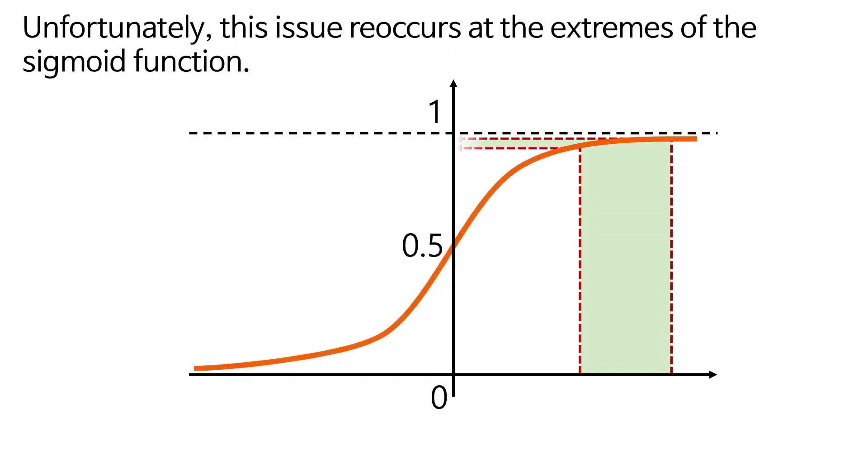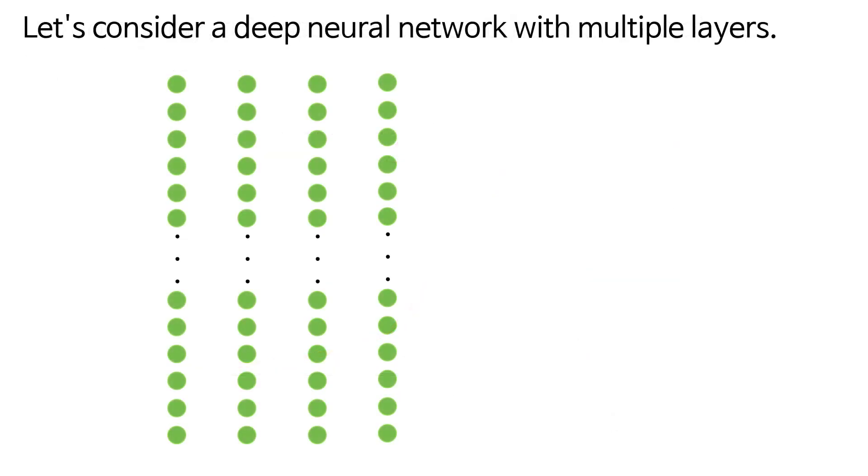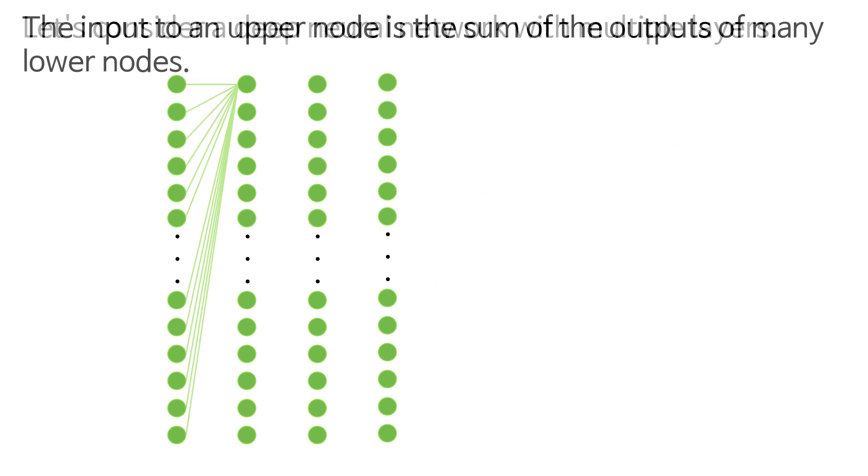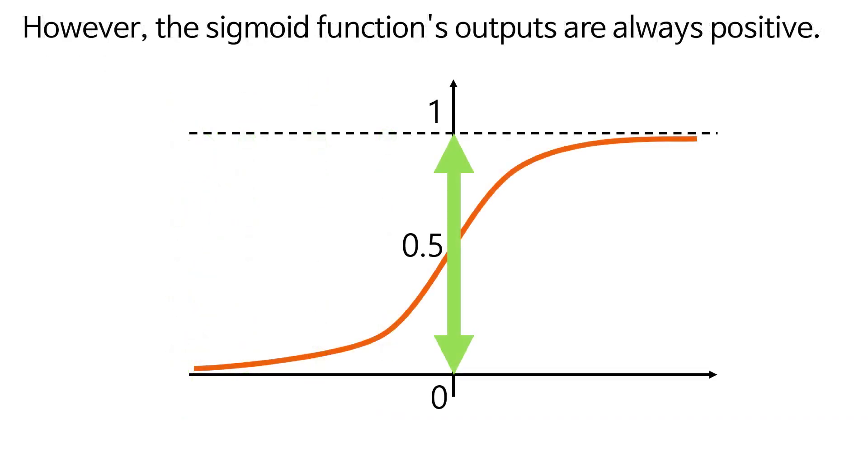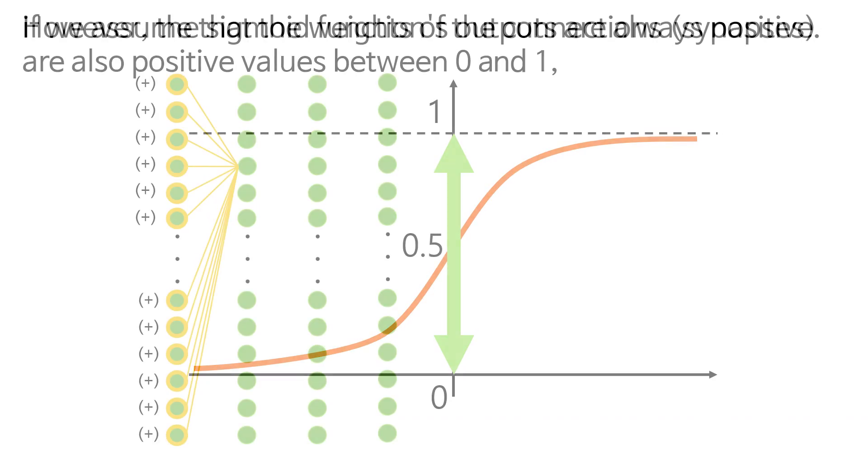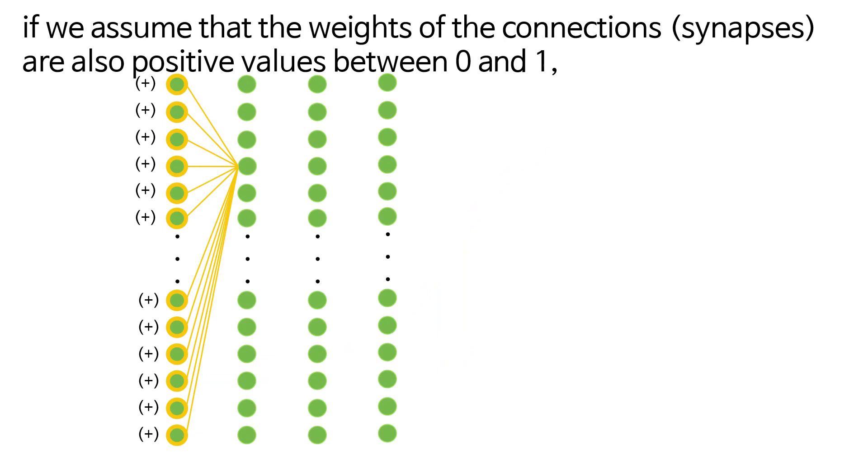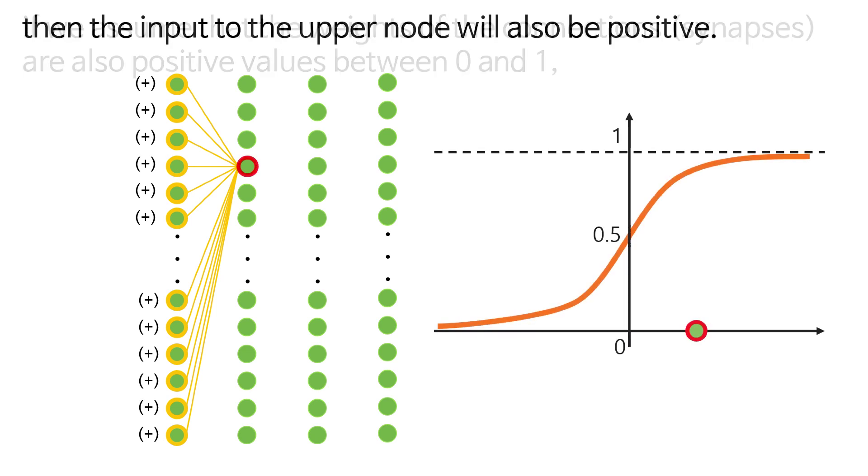Unfortunately, this issue reoccurs at the extremes of the sigmoid function. Let's consider a deep neural network with multiple layers. The input to an upper node is the sum of the outputs of many lower nodes. However, the sigmoid function's outputs are always positive. If we assume that the weights of the connections, synapses, are also positive values between 0 and 1, then the input to the upper node will also be positive.